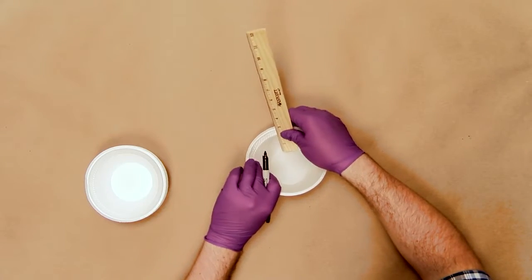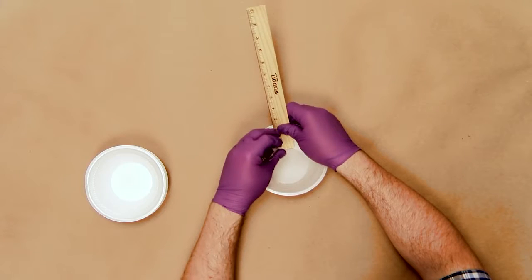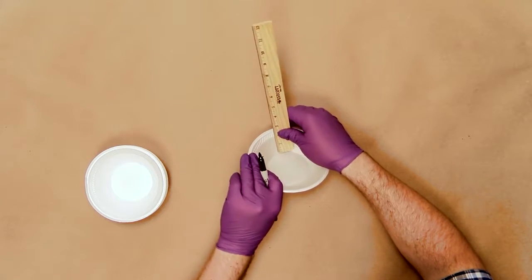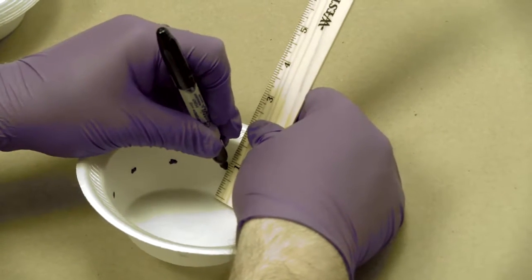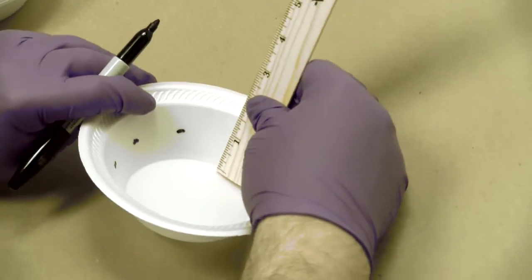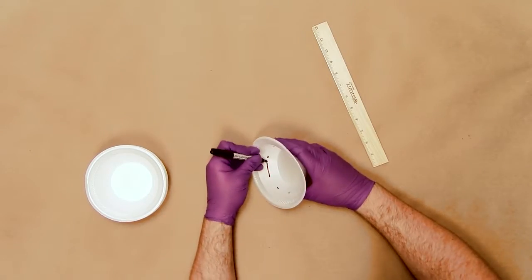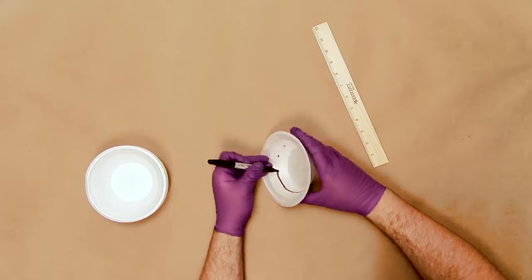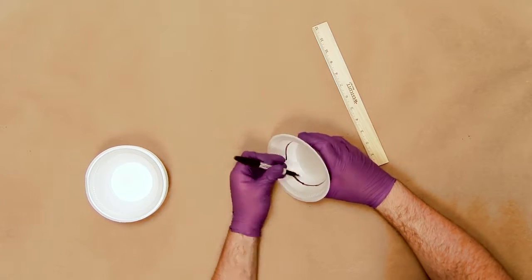Have each student prepare a Styrofoam bowl so that it is ready for the cement paste. They should use a ruler to measure three-quarters of an inch from the bottom of the bowl on the slanted portion and mark it with a pen. Measure this in several places and then use the marks to draw a line around the inside of the bowl.